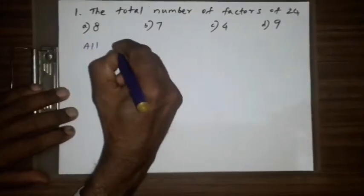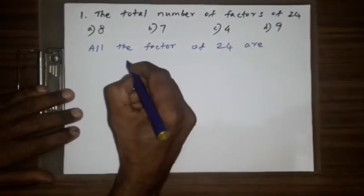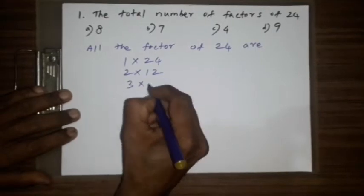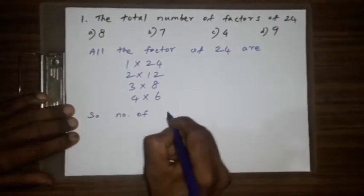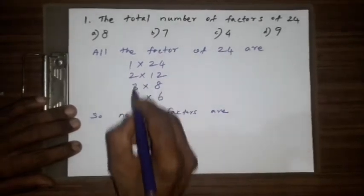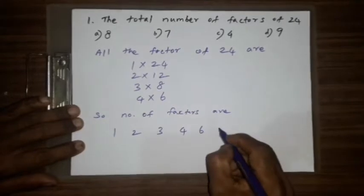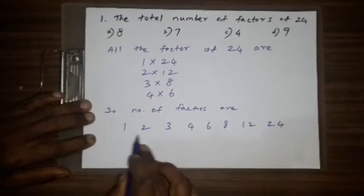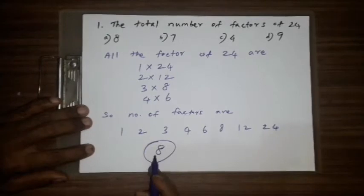All the factors of 24 are 1 x 24, 2 x 12, 3 x 8, 4 x 6. So the number of factors are 1, 2, 3, 4, 6, 8, 12, 24. So 1, 2, 3, 4, 5, 6, 7, 8. So 8 is the correct answer.